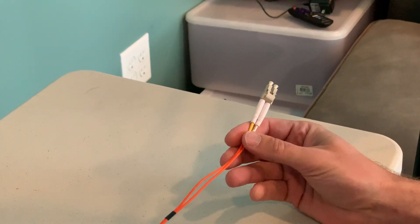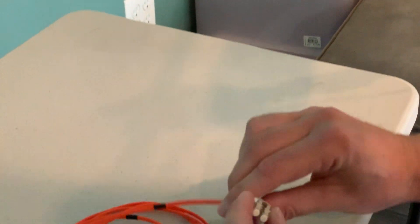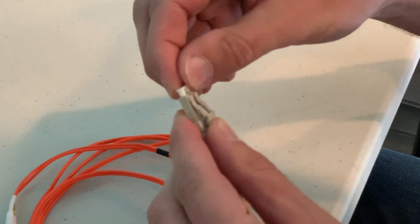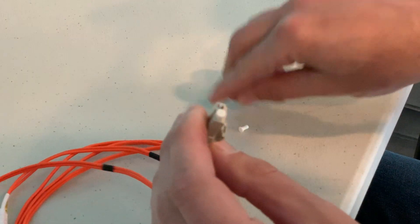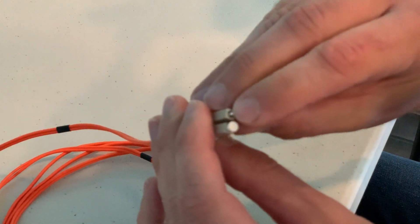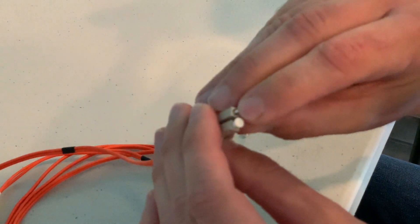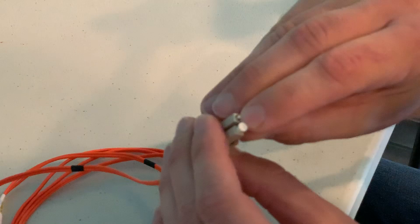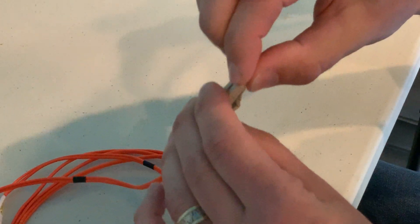When you get this, the first thing you want to do is pop off these little caps here. This is actually a piece of ceramic with the glass in it—it's the size of a human hair, so you can't really see it. Get these little caps off here.